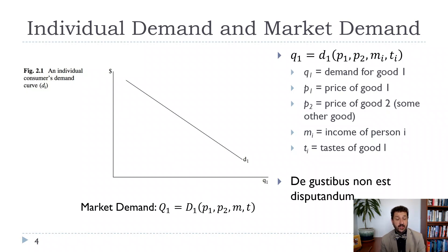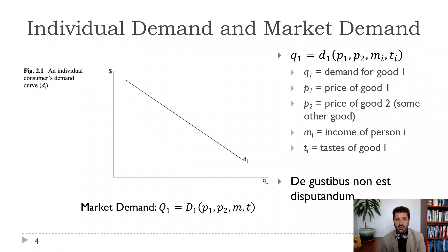We're going to think about income, because generally for most normal goods, when income goes up, demand goes up — though there will be some inferior goods where that's not the case. And then tastes, which will vary by person. That's going to be where we talk about the difference between horizontal differentiation and vertical differentiation.